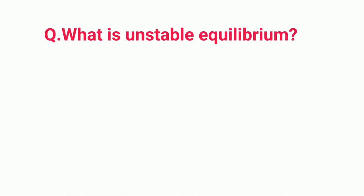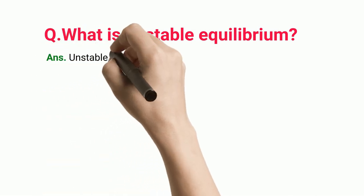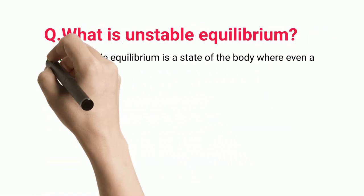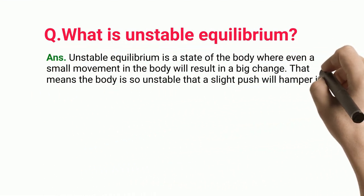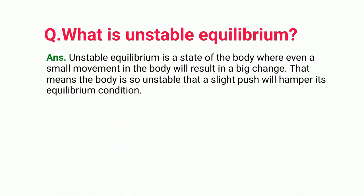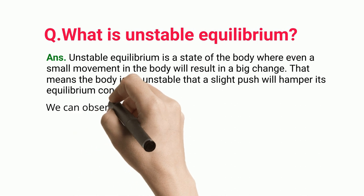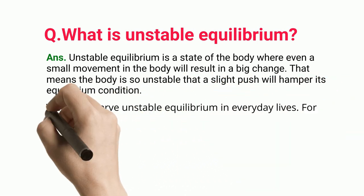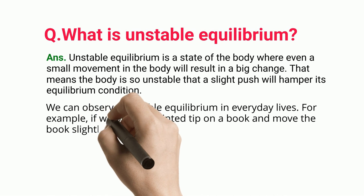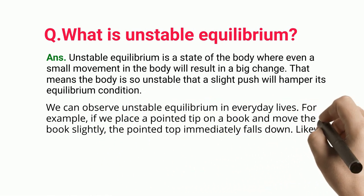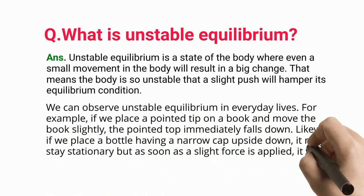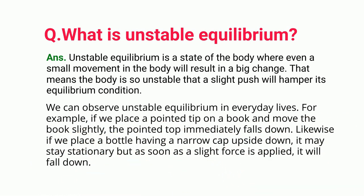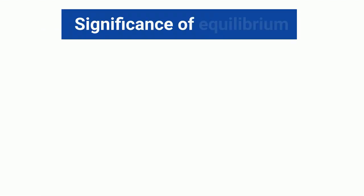Unstable equilibrium is a state of the body where even a small movement will result in a big change — the body is so unstable that a slight push will disrupt its equilibrium condition. For example, if we place a pointed tip on a book and move the book slightly, the pointed tip immediately falls down. Similarly, a bottle placed upside down on its narrow cap may stay stationary but will fall as soon as a slight force is applied.